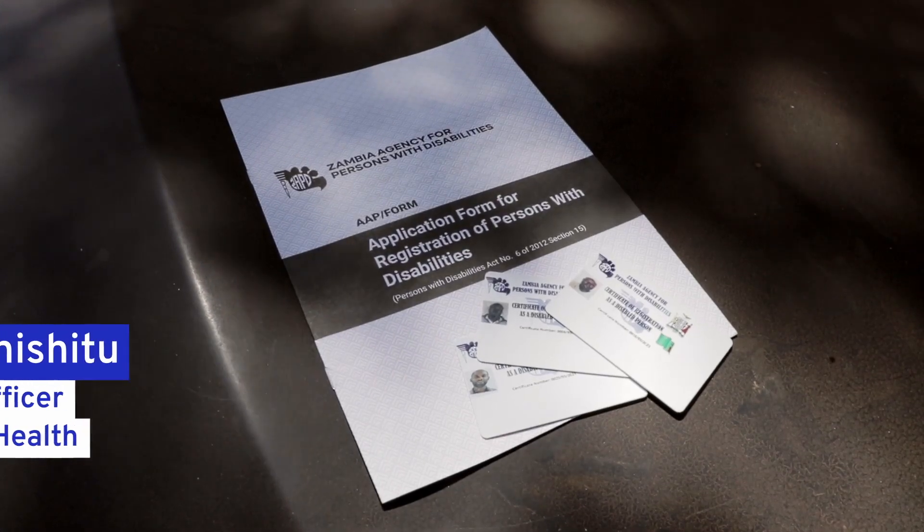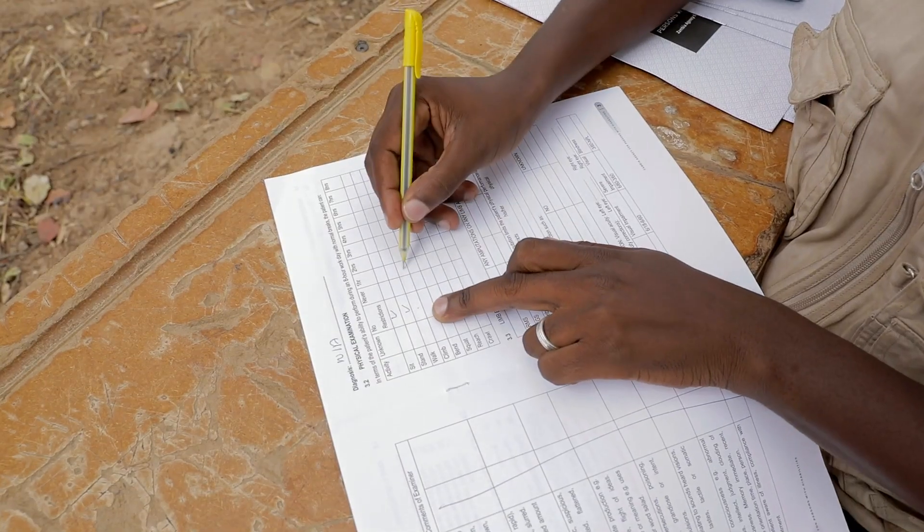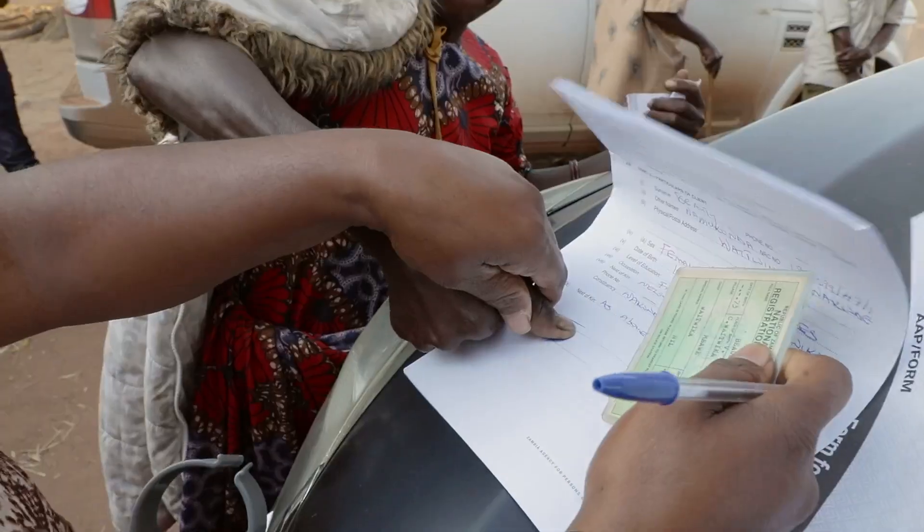One of the challenges of the pen and paper process is that it was taking a long time — every question needed to be documented in legible handwriting. When captured on paper, officers would go back and start keying in the data, introducing human error at two points: at capturing and also at entry into the system.